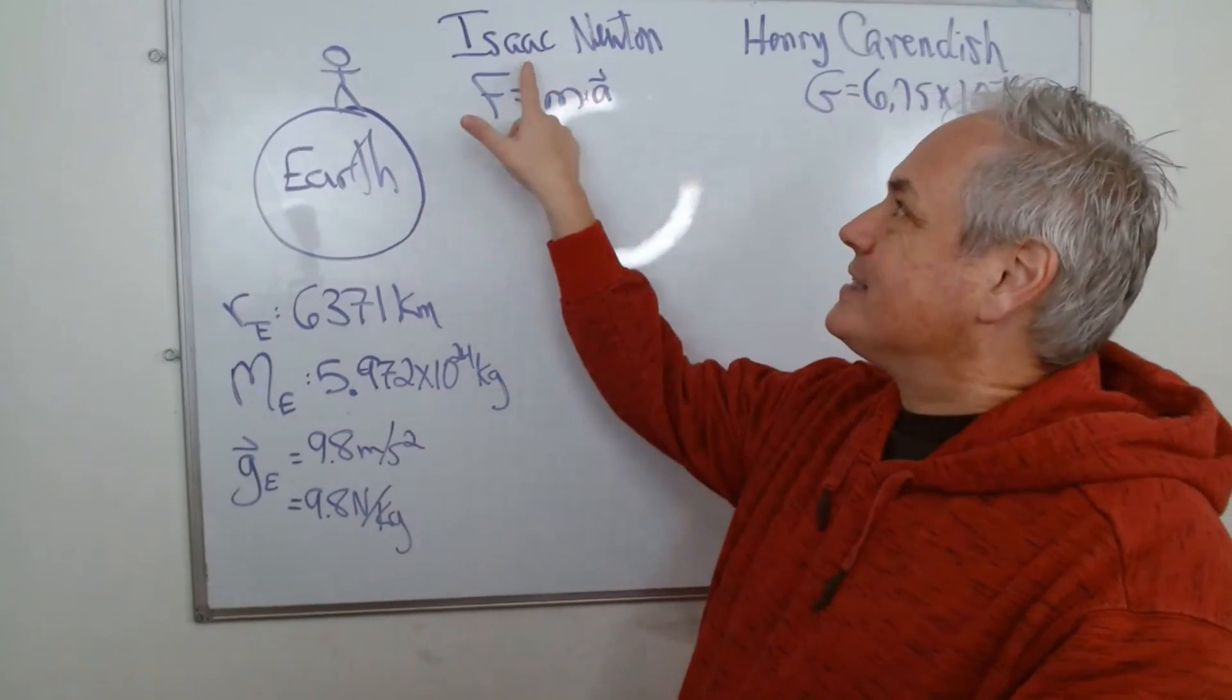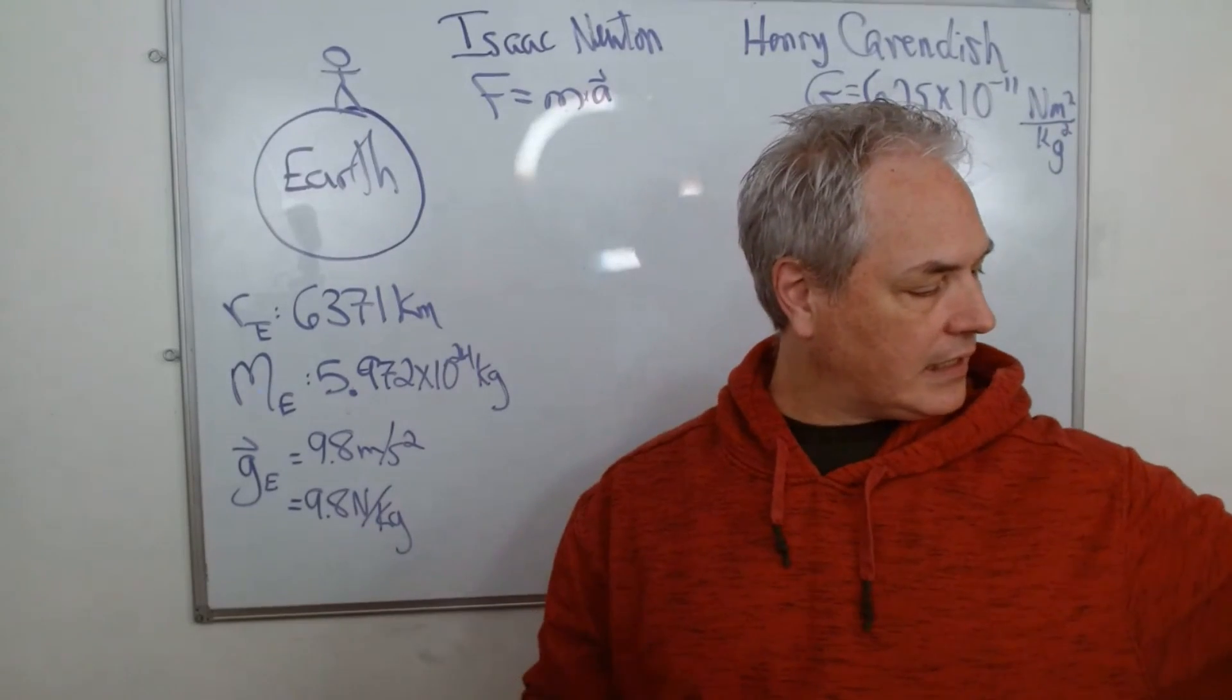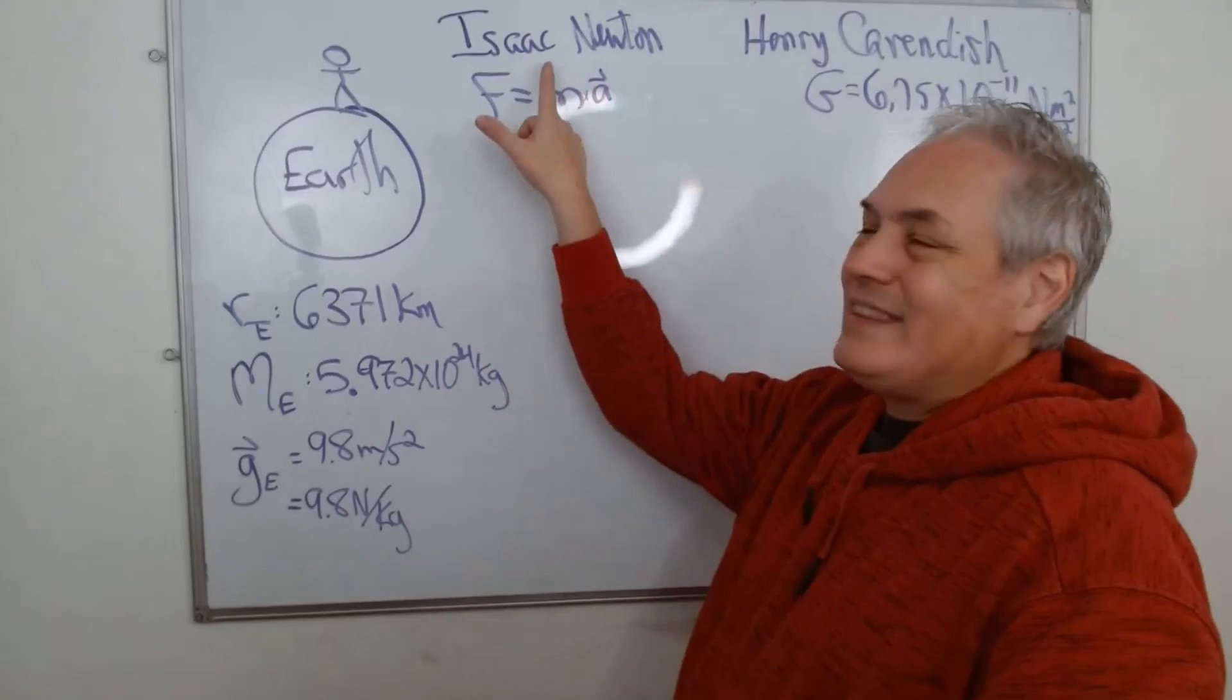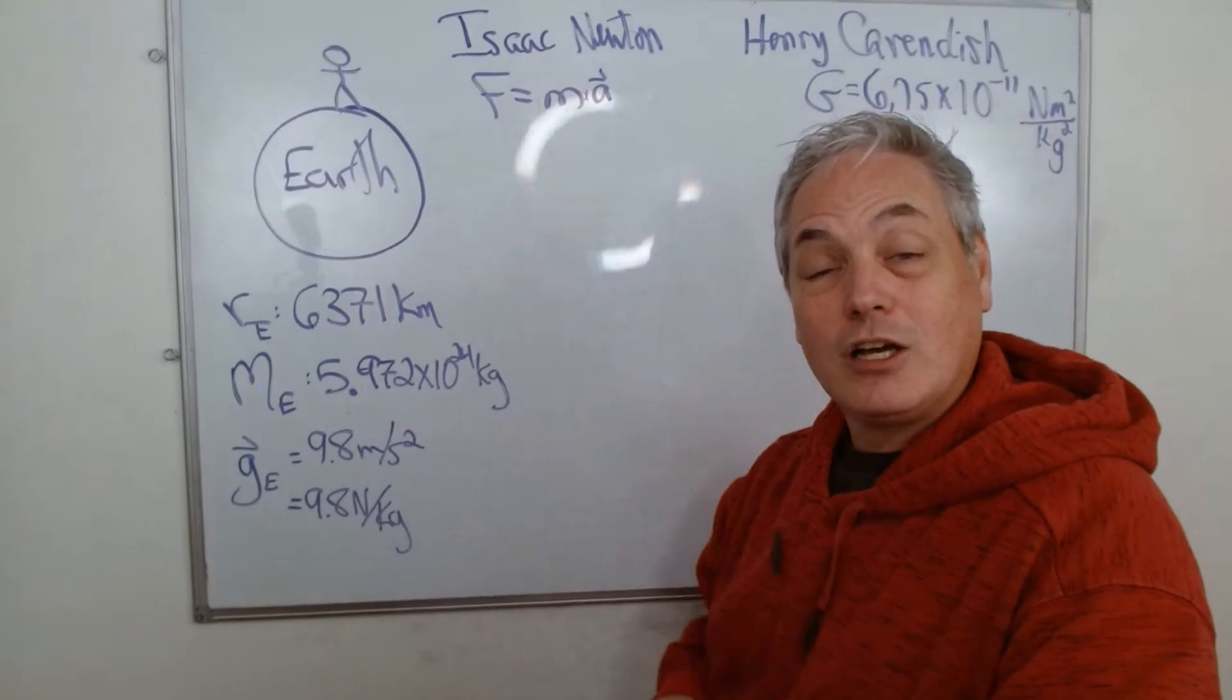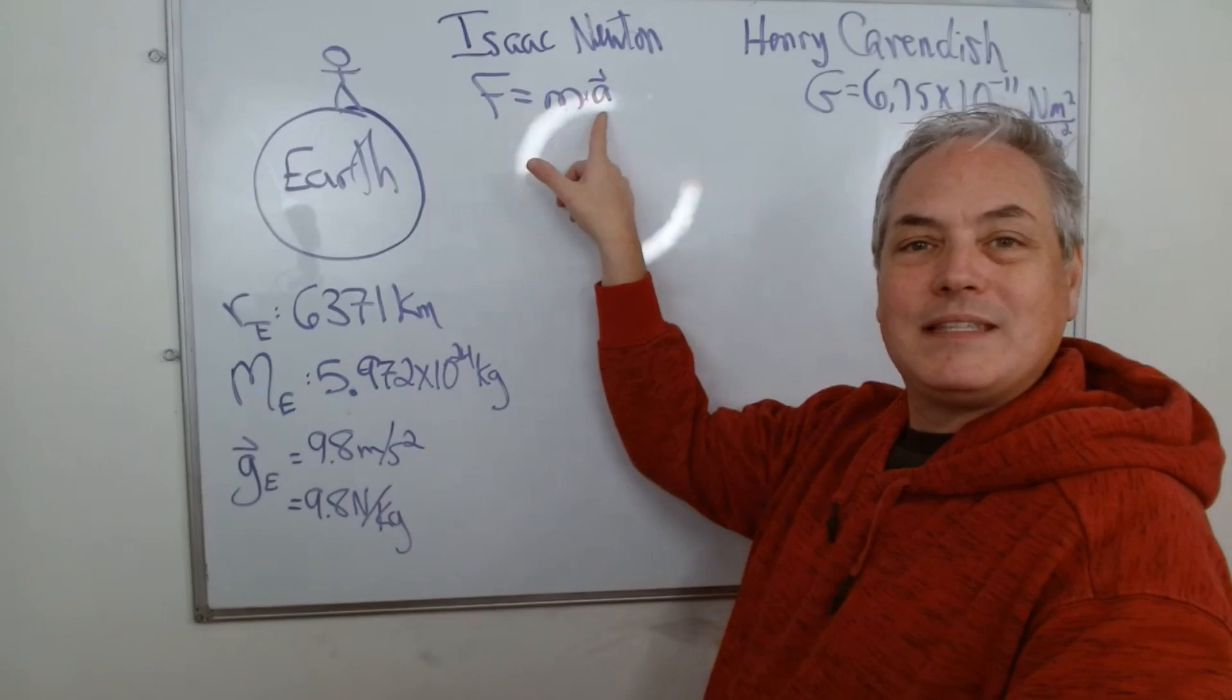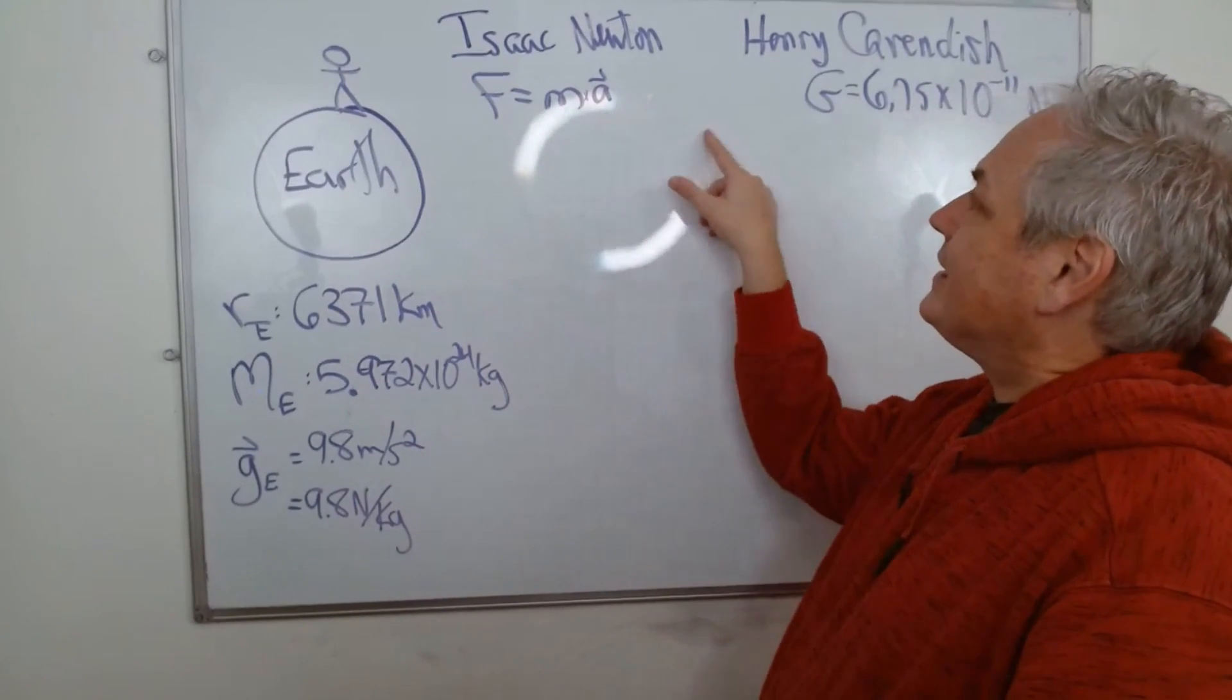Second, we have a scientist in the past. His name was Isaac Newton in the 1700s. He did this formula here, his second law of motion, and it says that the force equals the mass times the acceleration on that mass. So that's the first thing.